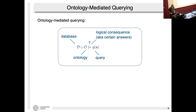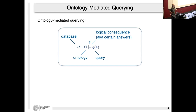The setup of ontology mediated querying in a box: we have a database, an ontology, and a query we want to answer. We are interested in those answers that logically follow from the database and the ontology taken together as a logical theory — the database is viewed as a ground theory, and we ask what follows in the standard sense of first-order logic.